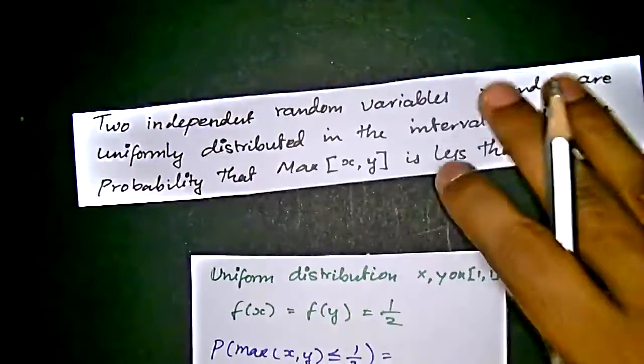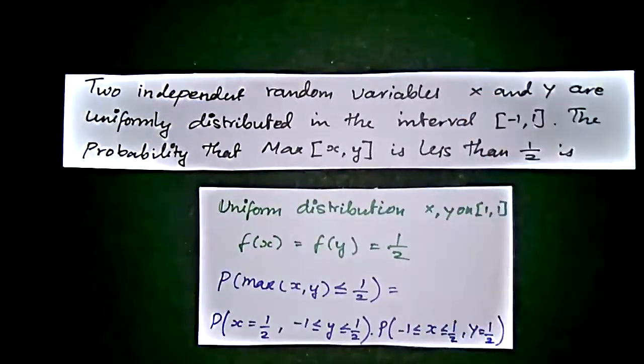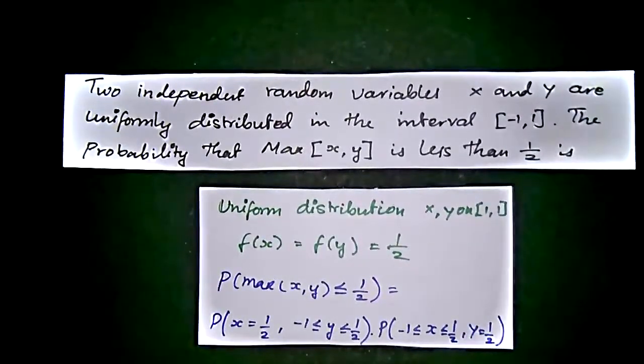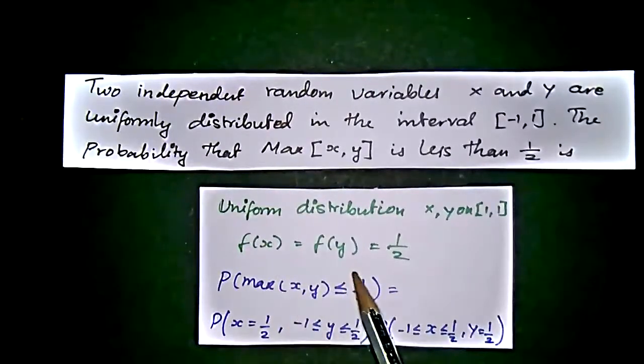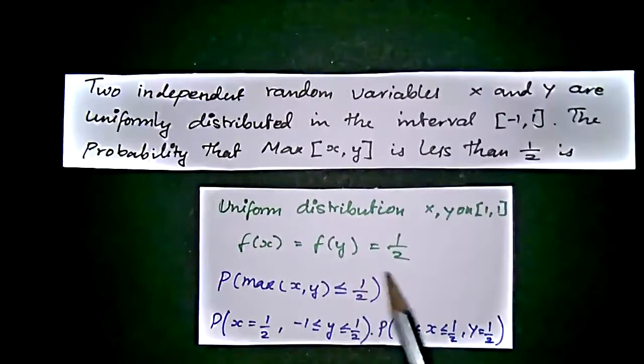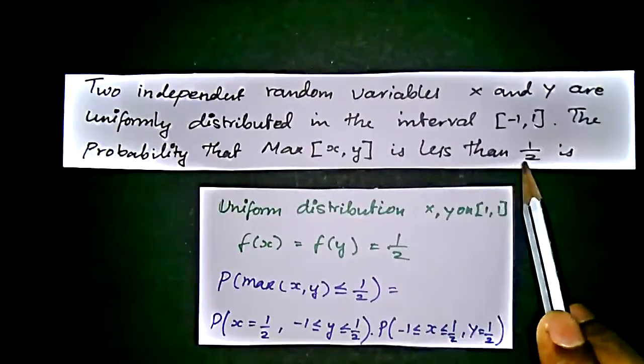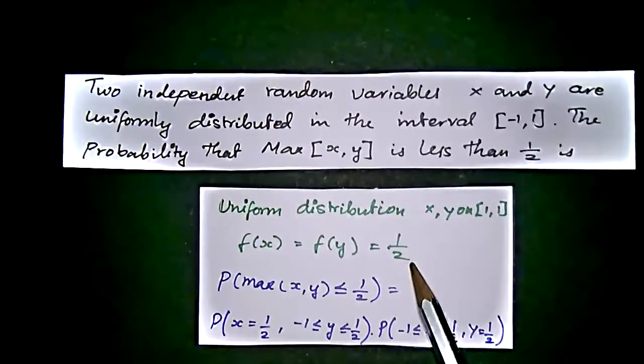We need help from the uniform distribution function. What the uniform distribution function says is f of x equal to f of y equal to 1 by 2. Here, the term given to us is 1 by 2, so we take it as 1 by 2.